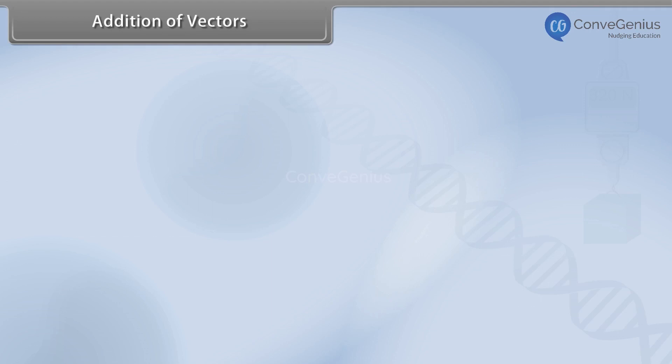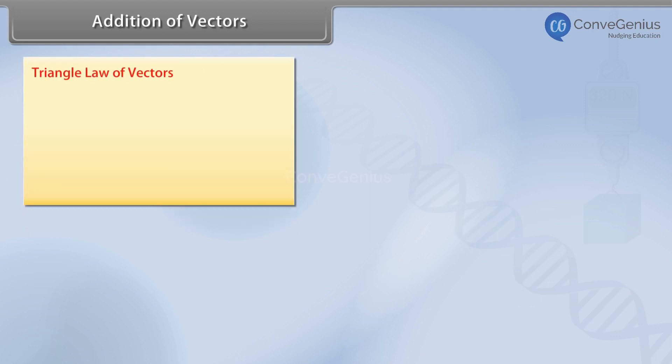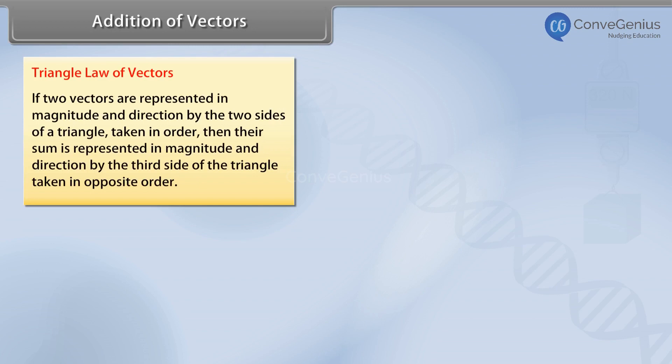Addition of vectors. Triangle Law of Vectors: If two vectors are represented in magnitude and direction by the two sides of a triangle, taken in order, then their sum is represented in magnitude and direction by the third side of the triangle, taken in opposite order.